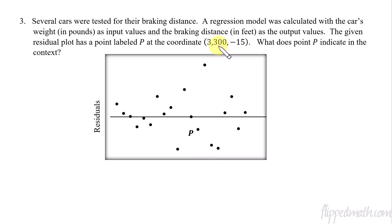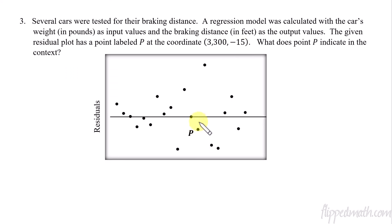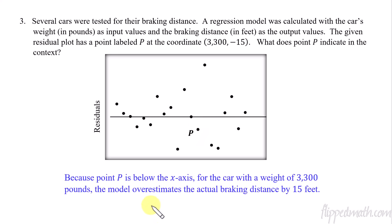All right. So this value 3300, that represents something to do with the weight of the car. The negative 15 is the output. It has something to do with a braking distance. So what is this? So when you have a car that's 3300 feet, what does this negative 15 represent? It's negative 15 from the model, negative 15 feet off of the model. So here's the statement we write out. Because point p is below the x-axis, for the car with a weight of 3300 pounds, the model is overestimating the actual braking distance. See, the model is the line. And so the model is overestimating that car's braking distance by 15 feet. That's how we put this into context. Make sure you get this written down. Being able to answer questions like this really does show that you understand the use of a residual plot and what all of these little dots mean.